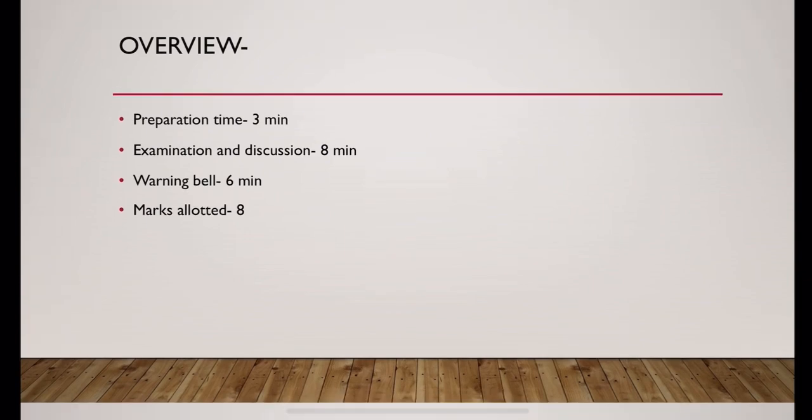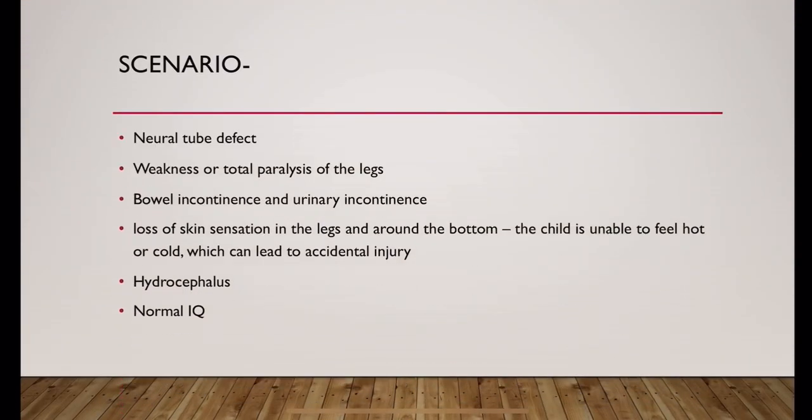Total marks allotted: eight. The scenario is a neural tube defect. Weakness or total paralysis of legs could be present. Bowel incontinence or urinary incontinence could be associated. Loss of skin sensation in the legs or bottom could lead to accidental injury because the child is unable to feel hot or cold. Hydrocephalus could be present.